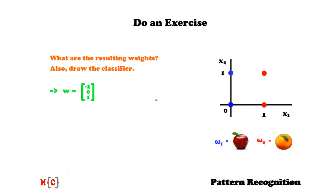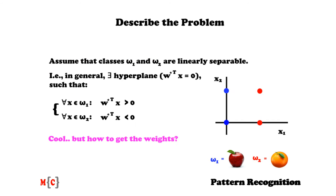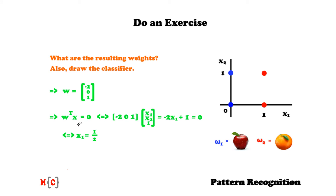We have obtained the weight vector that we wanted. The goal was to find these weights to create the hyperplane. Now that we have the weights, we can construct our hyperplane. We do the multiplication of the weight vector transposed with x, which yields minus 2 times x1, plus 0 times x2 (which is redundant), plus 1 times 1. So our resulting line is: minus 2 times x1 plus 1 equals 0, or simply x1 equals one half. If we draw this, we get a line that perfectly separates the training objects. We have obtained all the answers for the exercise and achieved what we wanted — we can now separate the apples from the oranges.